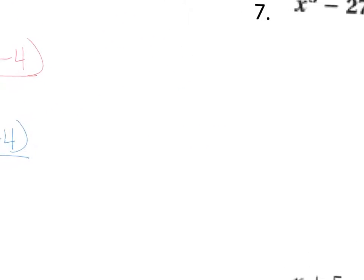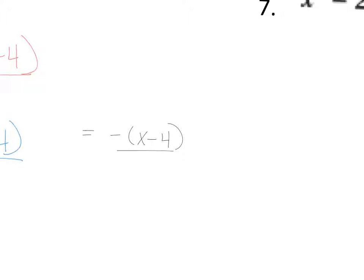And when I move over, I'll rewrite my problem. So, I am left with a negative (x - 4) all over 1. That 1 can go away. And then if I want to distribute that negative, I'm going to have -x + 4. And that's your answer.